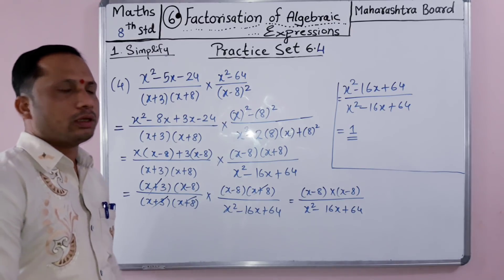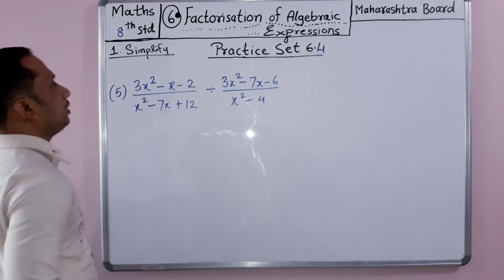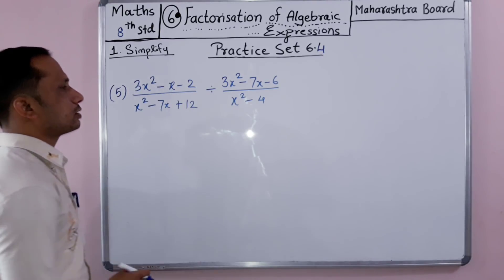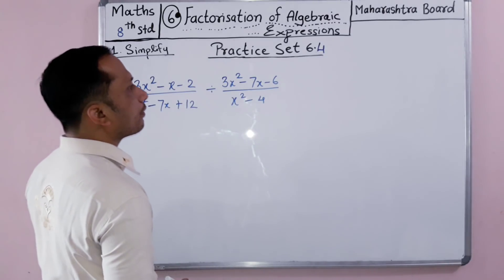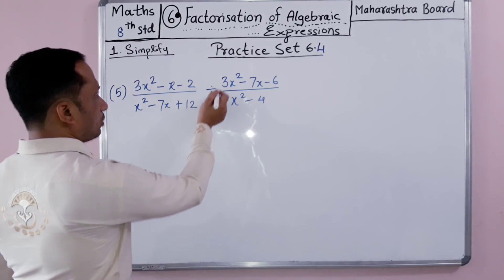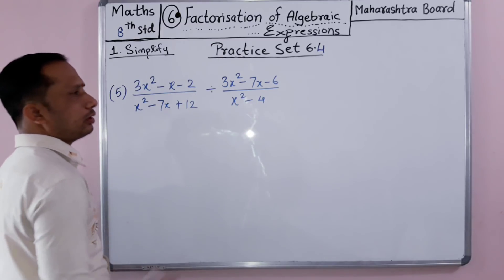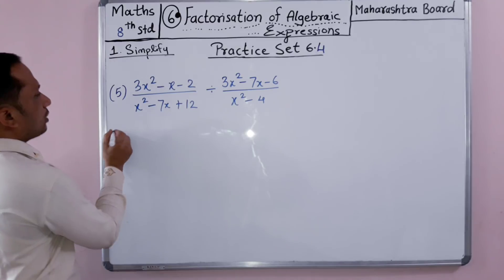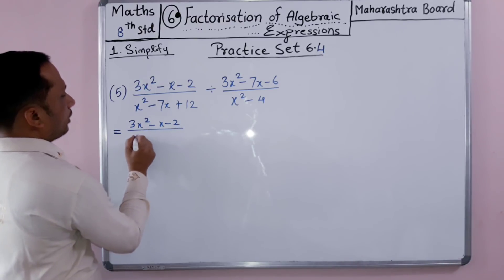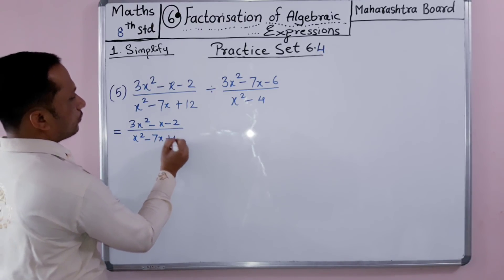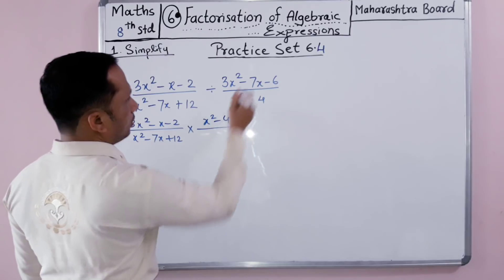Now the fifth problem: 3x squared minus x minus 2 divided by x squared minus 7x plus 12, divided by 3x squared minus 7x minus 6 divided by x squared minus 4. The division sign changes when we bring x squared minus 4 to the numerator and the other denominator stays. We rewrite: 3x squared minus x minus 2 over x squared minus 7x plus 12, times x squared minus 4 over 3x squared minus 7x minus 6.